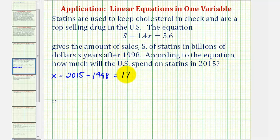Now we'll substitute 17 for X and solve for S to answer the question. We have the equation S - 1.4(17) = 5.6. Well, 1.4 times 17 equals 23.8, so this becomes S - 23.8 = 5.6.